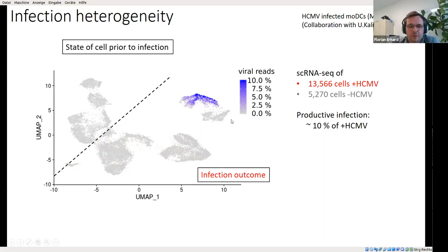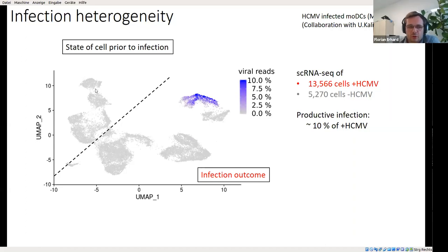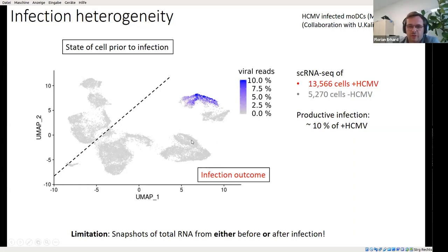This really shows the problem. For all these cells, we know about the infection outcome, but what we do not know is what they were like eight hours earlier. The infection and the cytokines produced by these cells cause massive changes in the regulatory programs of all these cells. For the uninfected cells, we know what they are like without virus, but there is no way to tell how they would turn out once infected. The limitation is that single-cell RNA-seq only provides a single snapshot of gene expression, but what we need is basically two snapshots — before and after infection — and this for the very same cells.